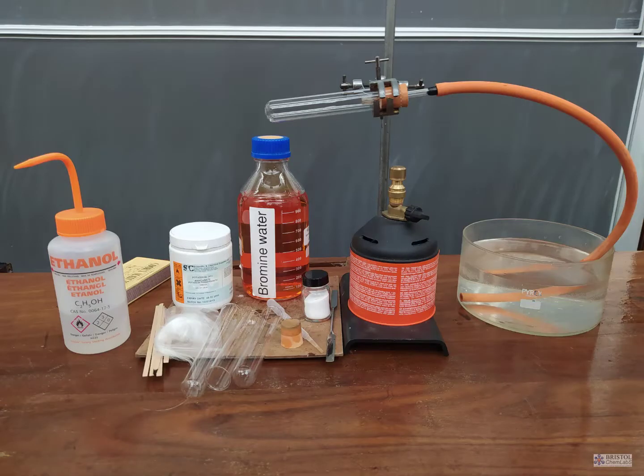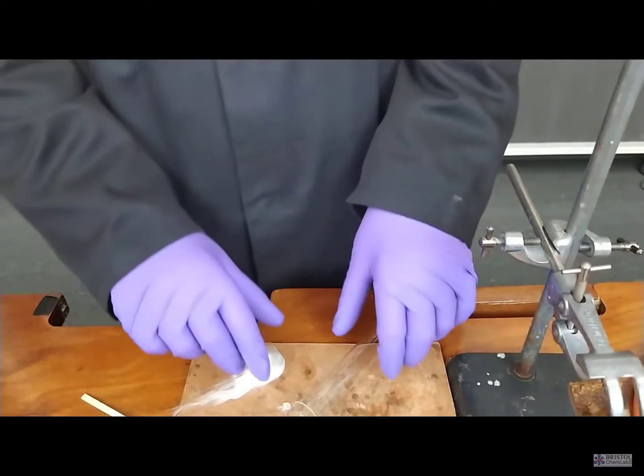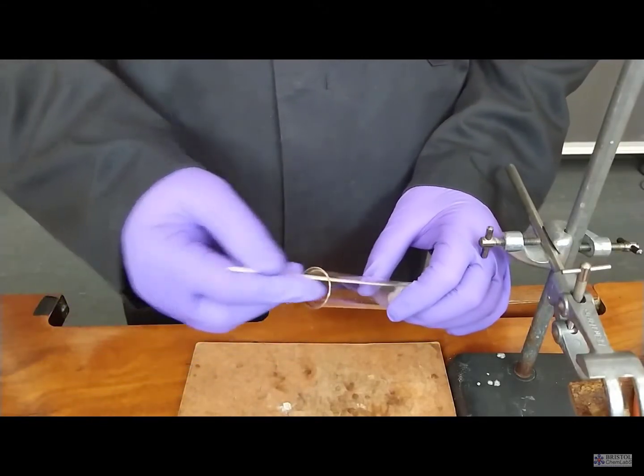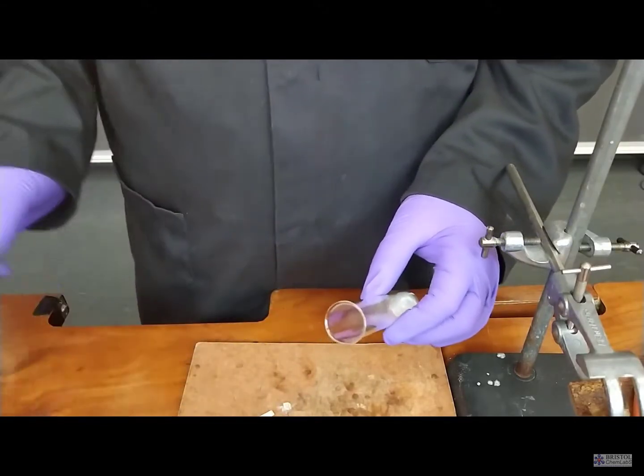Glass wool or mineral wool is used as a reservoir for the ethanol. Because the tube has to be tilted on its side, you can't simply pour the ethanol in.